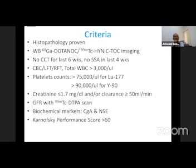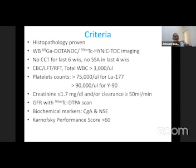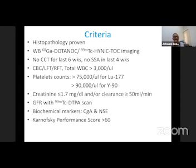Criteria for PRRT selection: the patient should have proven histopathology and should have undergone gallium DOTANOC PET-CT, or if not available, technetium-99m labeled HydNOC whole-body imaging plus SPECT. Patients should not have received combination chemotherapy in the last four to six weeks, nor somatostatin analogs in the last four weeks. Normal hemogram, adequate platelet counts, creatinine less than 1.7 mg/dL, creatinine clearance more than 50 ml/min (now sometimes 40 ml/min), GFR assessed with technetium DTPA scan, and Karnofsky performance score more than 60.